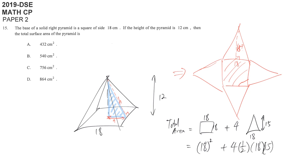And then just simply use your calculator, we will get the answer 864 cm², the answer is D.